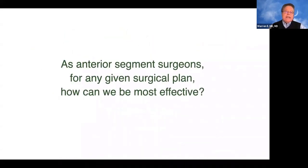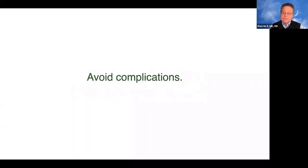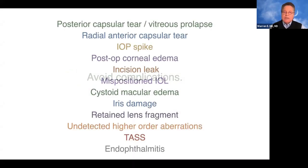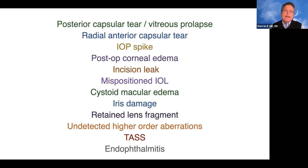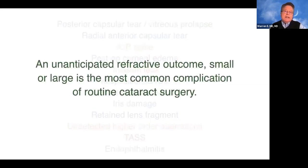As anterior segment surgeons, how can we really be most effective for any given surgical plan? We want to avoid complications. For cataract surgery, the standard list includes posterior capsular tear, vitreous prolapse, IOP spike, dislocated IOL, CME, retained lens fragment, TASS, and endophthalmitis. But when you think about it, an unanticipated refractive outcome — small or large — is really the most common complication following routine cataract surgery.